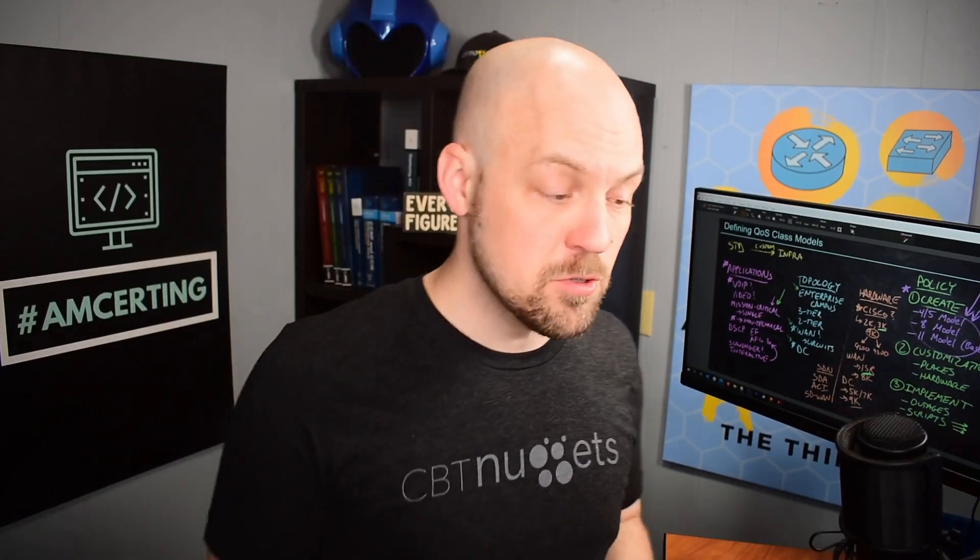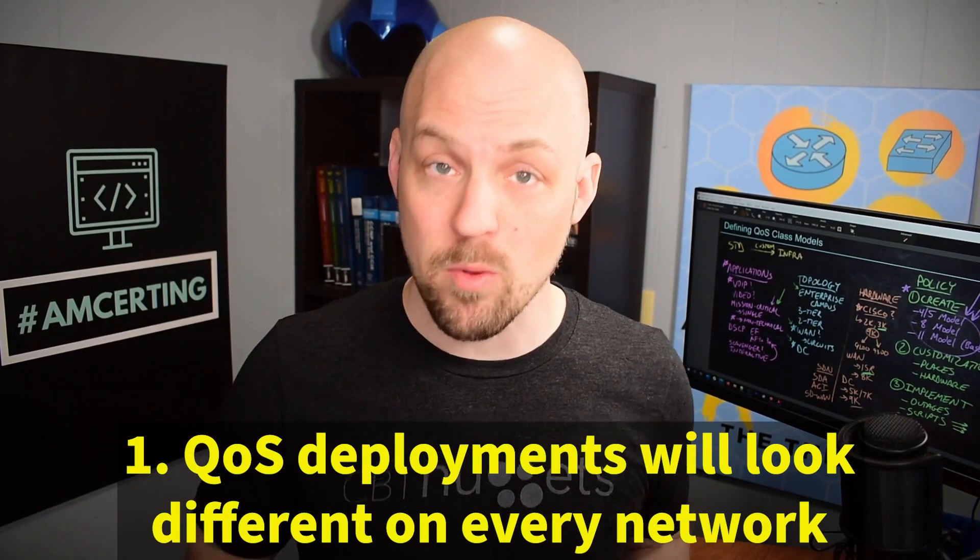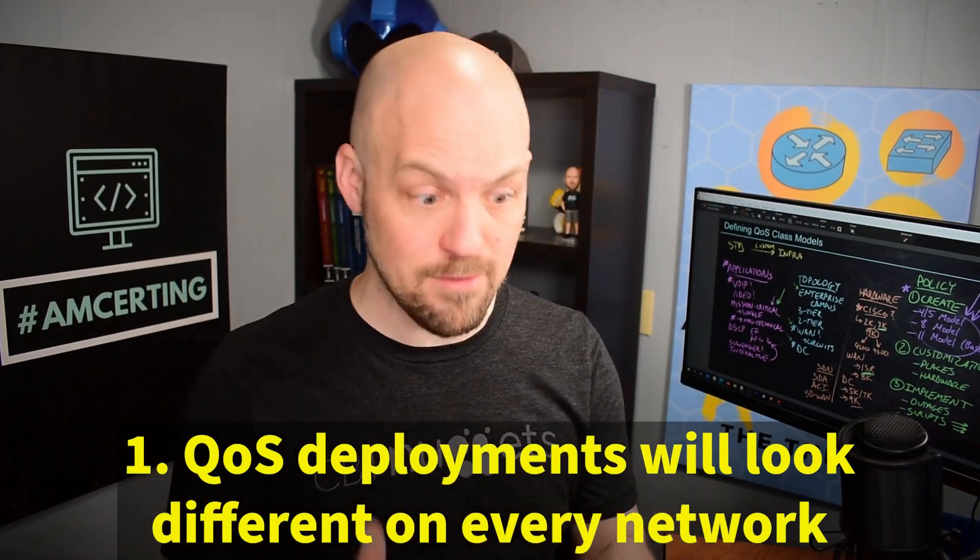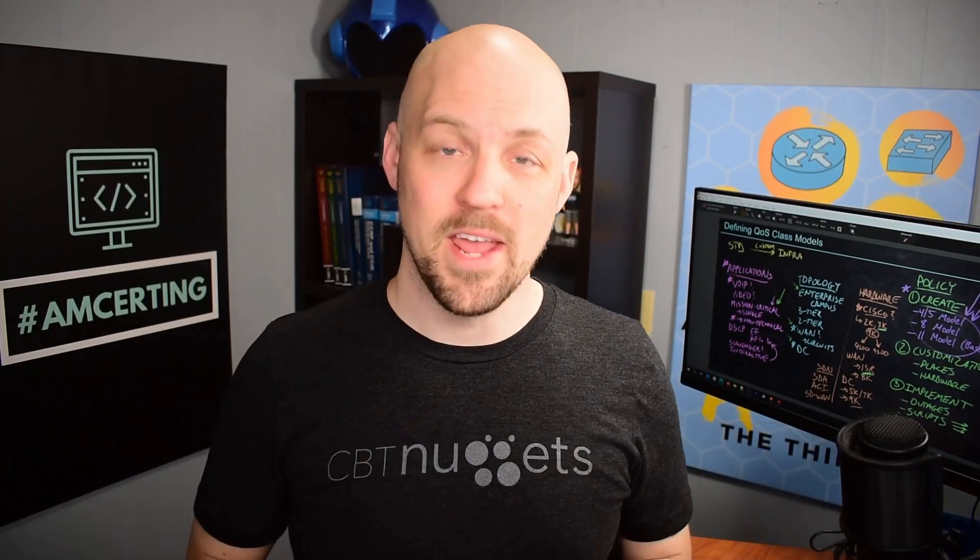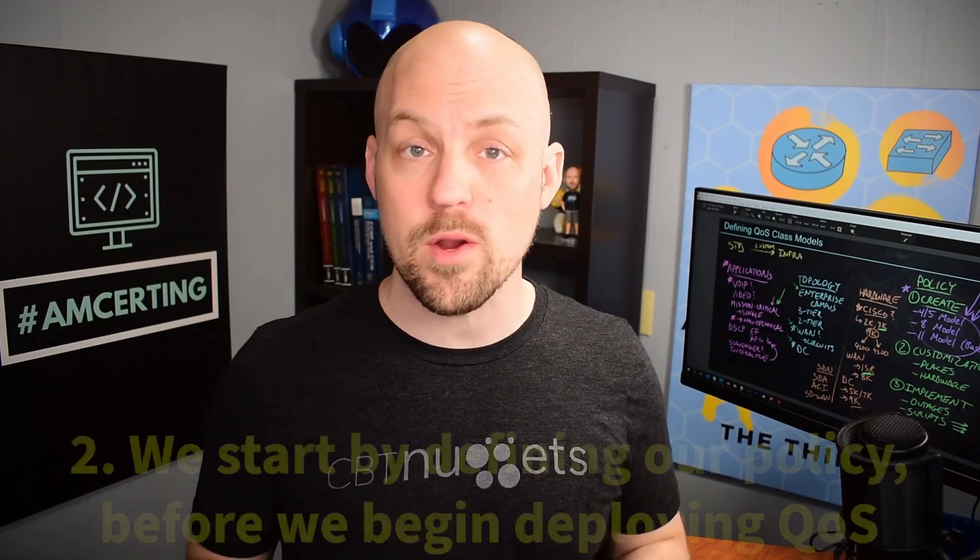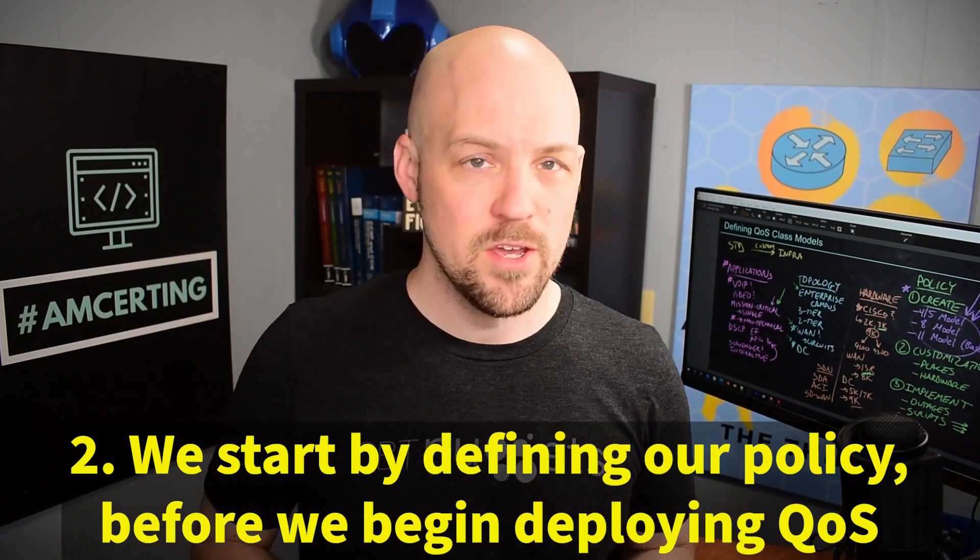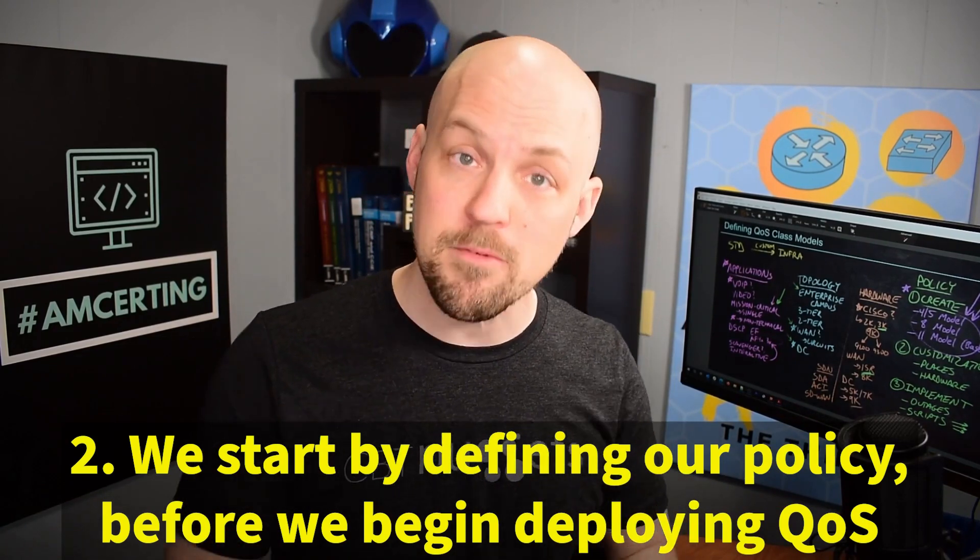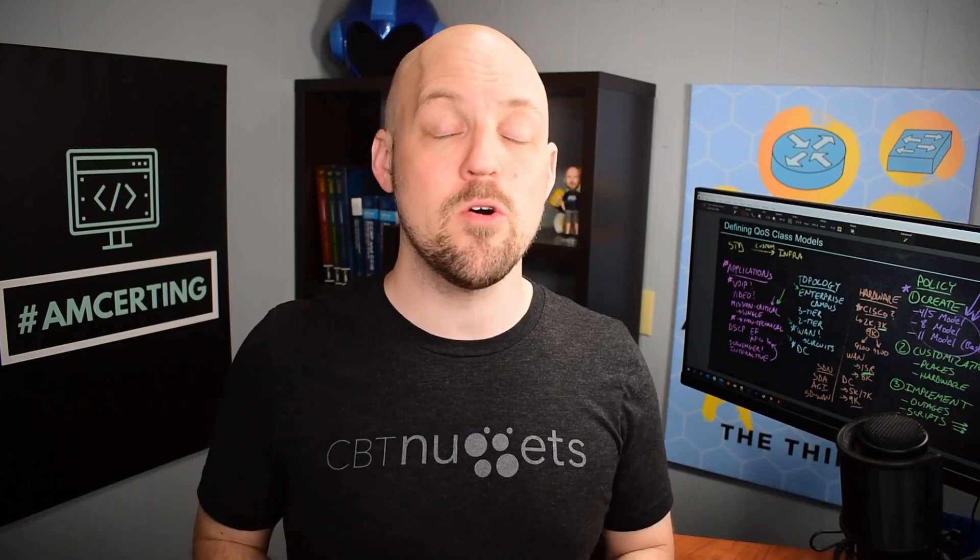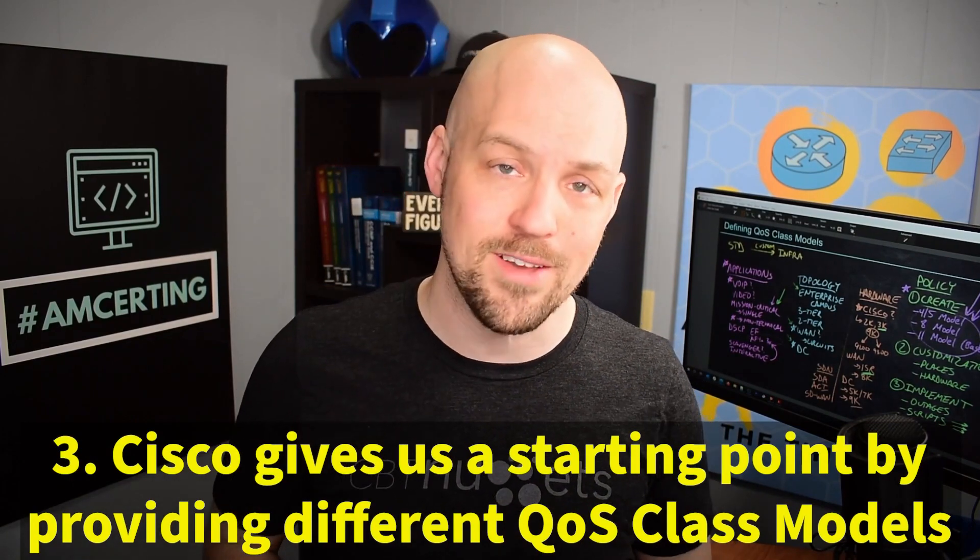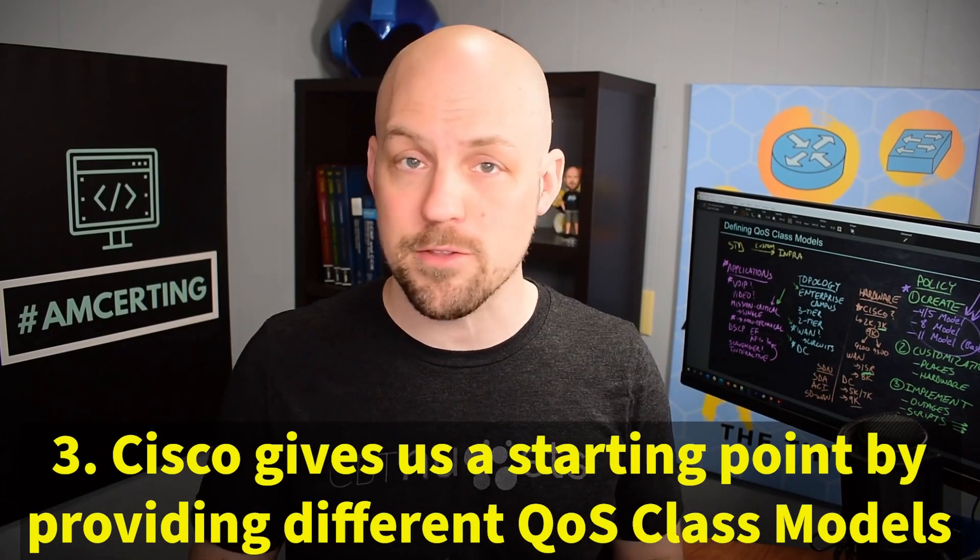So let's remember how we started, which is that QoS is going to look very different on all of our networks. We need to understand that we can't just take a standardization and apply it to every single network that we're in charge of. And so we're going to need some starting points here. And that's where we begin by defining our policy. We talked about all the challenges. We don't want to get wrapped up in the challenges because we need to recognize that we're going to hit some of these things, but we don't want to get discouraged. We know that we've got a great starting point. And that starting point is going to be these different Cisco QoS class models that Cisco has given us. So they've given us these three different models, the 4.5, the 8, and the 11 models. We're going to be talking about them in more detail in the coming videos. I hope this has been informative for you and I'd like to thank you for viewing.